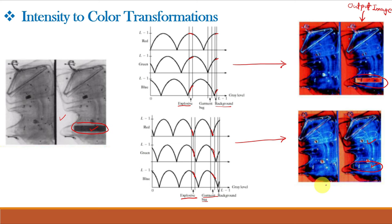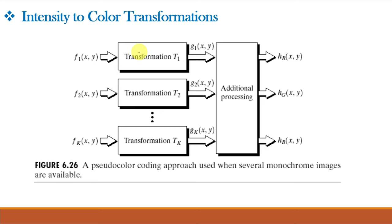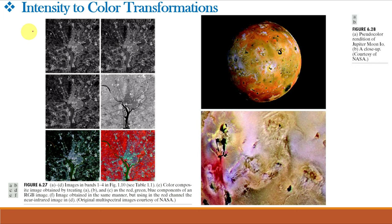This figure shows a pseudocolor coding approach used when several monochrome images are available rather than a single monochrome image. For this multi-spectral image processing, the additional processes can be techniques such as color balancing, combining images, and selecting the three images for display based on knowledge about response characteristics of the sensors used to generate images. For example, the first three images here are in the visible red, green, and blue plane images. And the fourth one is in the invisible infrared band. This photograph is of Washington DC with a river flowing.